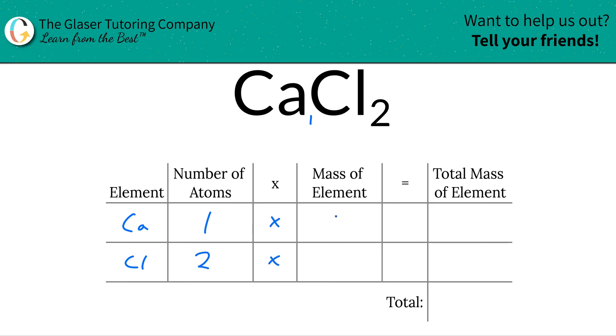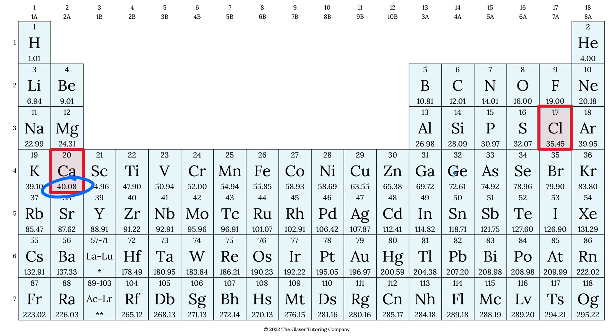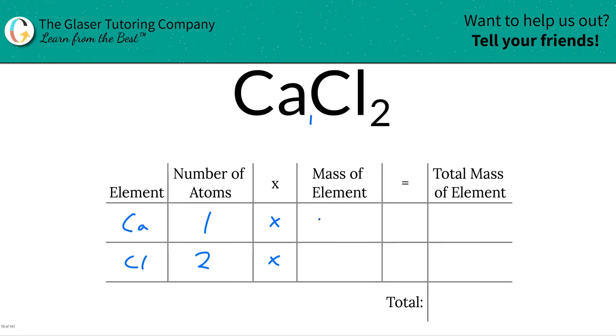Next, we're going to take those number of atoms and multiply by the mass of each particular element. That's where the periodic table comes into play. Here's calcium's mass, 40.08. Here's chlorine's mass, 35.45. So let's simply plug that in. So this is 40.08, this is 35.45.